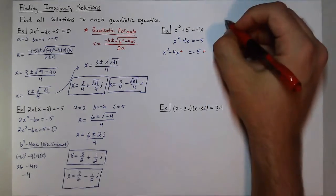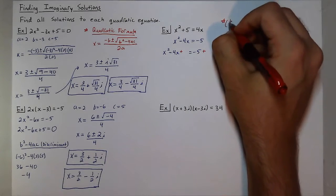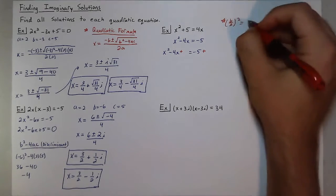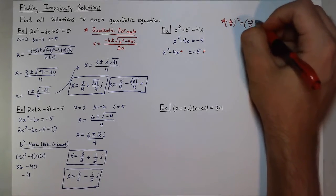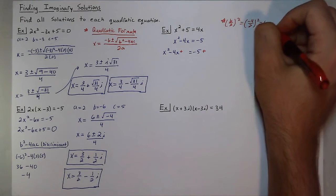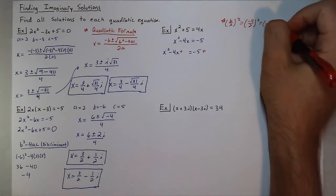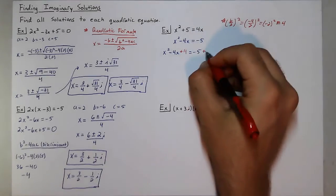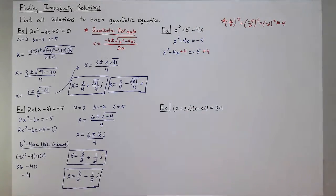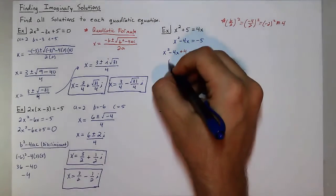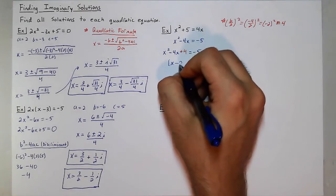That number I add right here is half of b squared, so negative 4 over 2 squared, which would be negative 2 squared, which is 4. So if you add 4 to each side, we'll now have a perfect square trinomial on the left, which would be factored into (x - 2)².